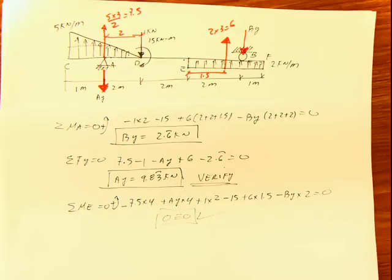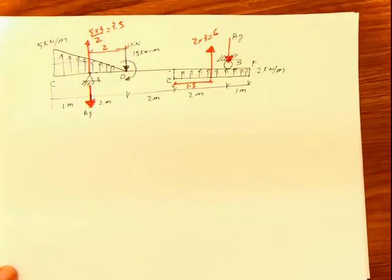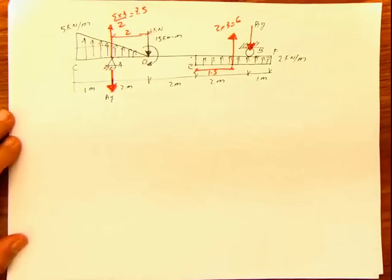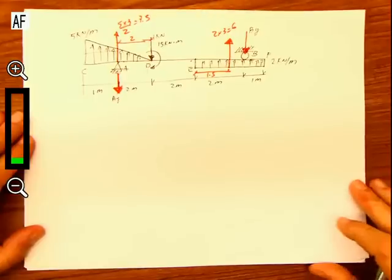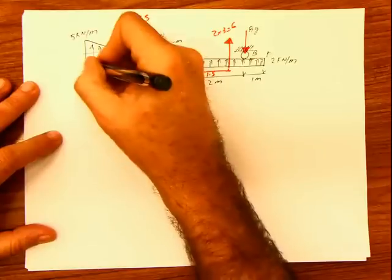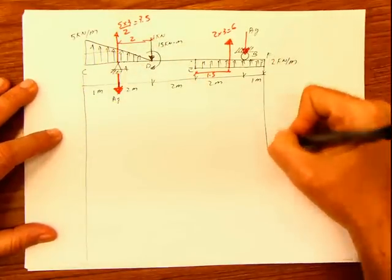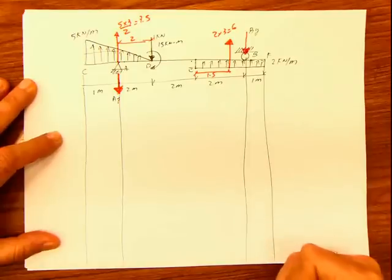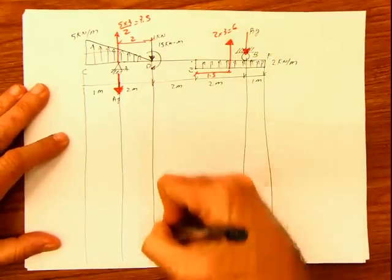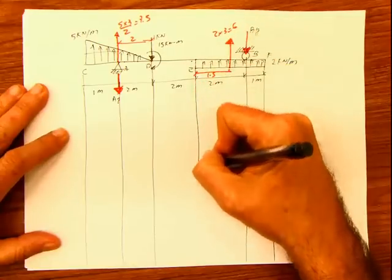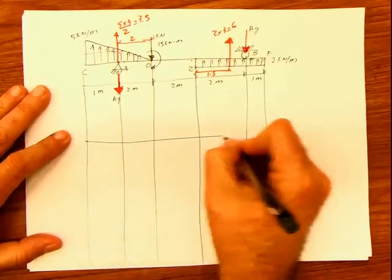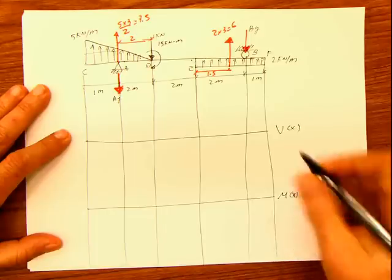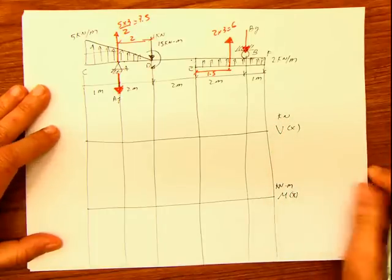In order to start our process, we start from the first point. Let's mark first the lines that we're using for doing the diagram. There's always one line at the beginning and one line at the end. Then we have to place one line at every single internal support. We also put a line wherever there are concentrated loads or moments, and lines where a load begins or ends. We will use this for drawing our shear in kilonewtons and our moment in kilonewton meters.